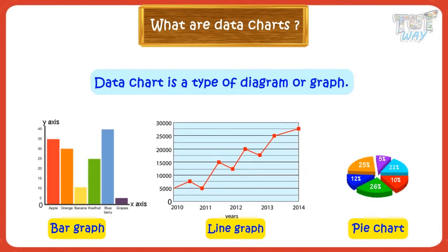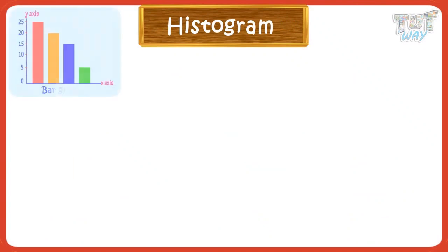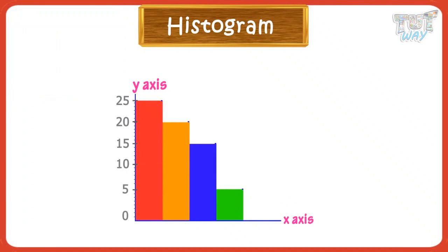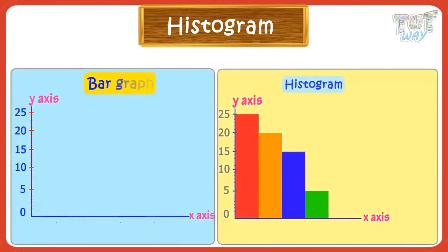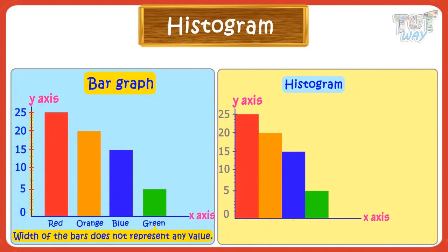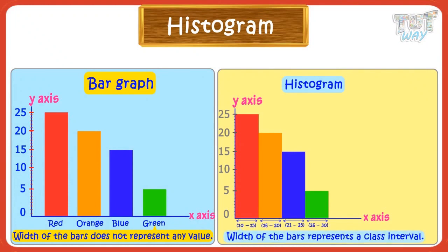Let's now learn a type of data chart which is called histograms. A histogram is also a bar chart with rectangular bars. The lengths of bars represent the values of entities. The difference from a bar chart is that in a bar chart, the width does not represent any value but the name of the entity. But in histograms, the width of rectangular bars represents the class interval — the entire range of values is divided into a series of small intervals and we count how many values fall into each interval.